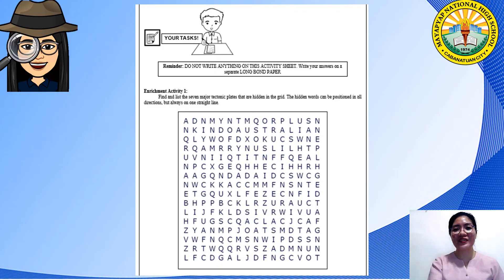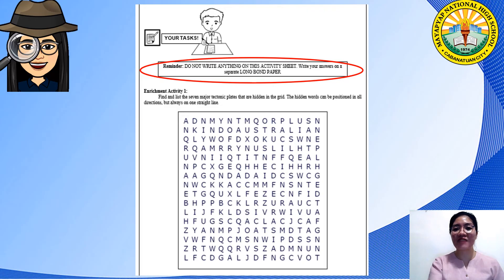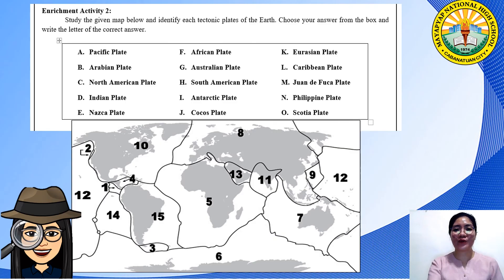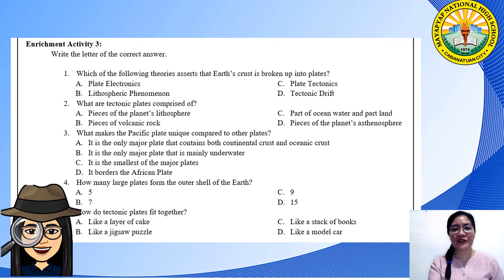Turn your activity sheet to the enrichment part. Do not write anything on this activity sheet — write your answer on a separate long bond paper. For Enrichment Activity 1, find and place the seven major tectonic plates hidden in the grid; hidden words can be positioned in all directions but always on one straight line. For Enrichment Activity 2, study the given map and identify each tectonic plate, choosing your answer from the box. For Enrichment Activity 3, write numbers 1 to 5 and write the letter of the correct answer.